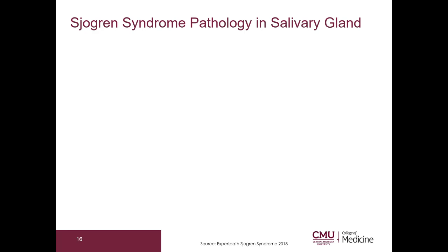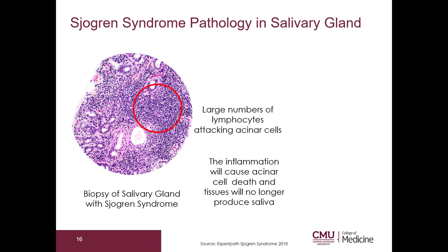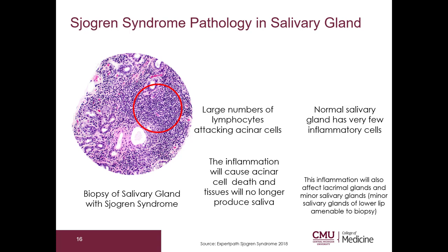Let's take a look at the pathology. Here you can see a biopsy of a salivary gland with Sjogren's syndrome. There are large numbers of lymphocytes attacking the acinar cells. The inflammation will cause acinar cell death and the tissues will no longer produce saliva. Normal salivary gland has very few inflammatory cells. This inflammation will also affect lacrimal glands and minor salivary glands, and the minor salivary glands of the lower lip are very amenable to biopsy for diagnostic purposes.